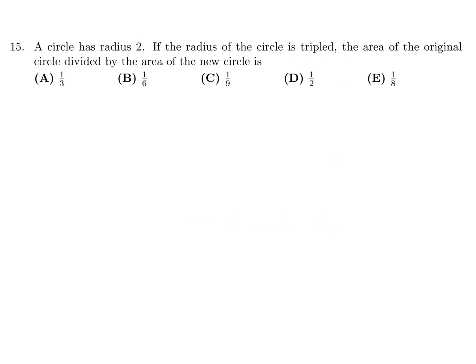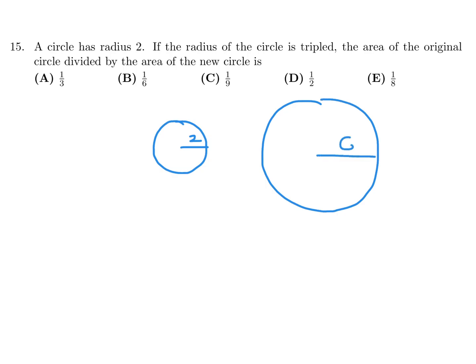A circle has radius 2. If the radius is tripled, the area of the original circle divided by the area of the new circle is what? The original circle has radius 2, so its area is π×2² = 4π. The new circle has radius 6, so its area is π×6² = 36π. The ratio of original to new is 4π over 36π, which is 1 over 9. Number 15, the answer is C.